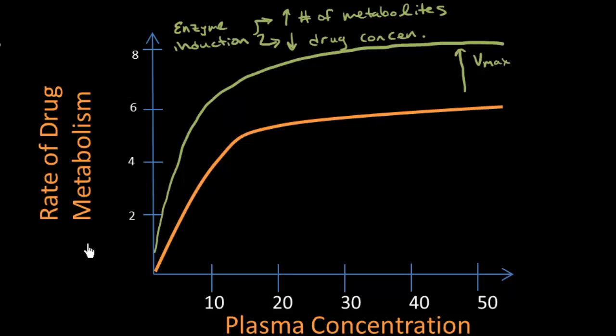If we're decreasing the rate of drug metabolism, here on the y-axis I have the rate of drug metabolism and on the x-axis I have the plasma concentration of a certain drug.